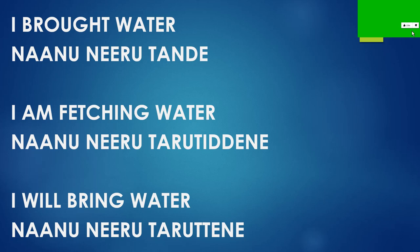We'll see how the sentence changes when you go from past tense to present tense to future tense — first person, second person, third person, singular and plural. Let's start with the first person 'I'. I brought water in Kannada, past tense: nanu neeru thandhe. I brought water — nanu neeru thandhe.